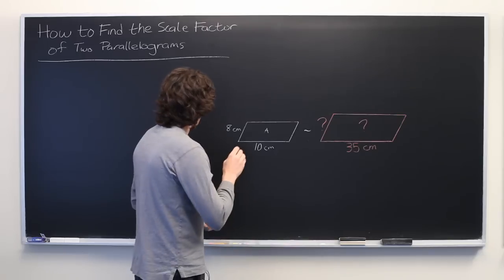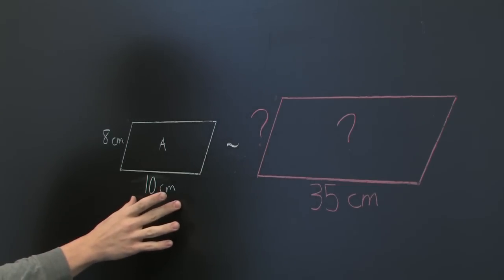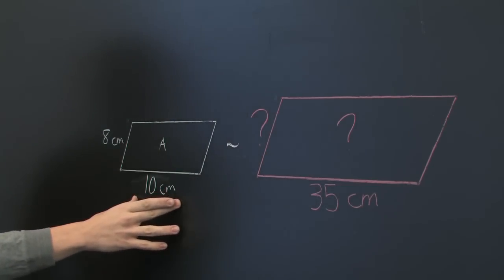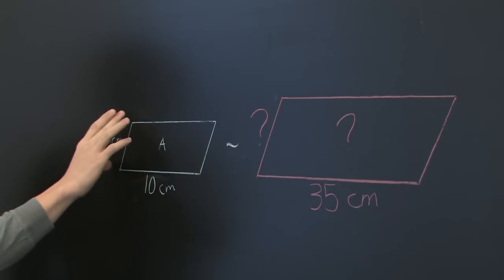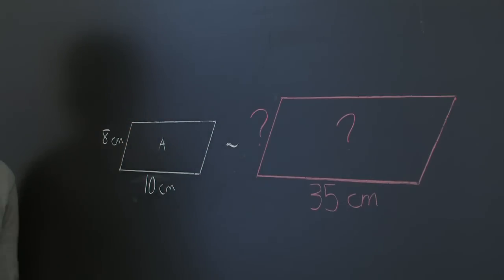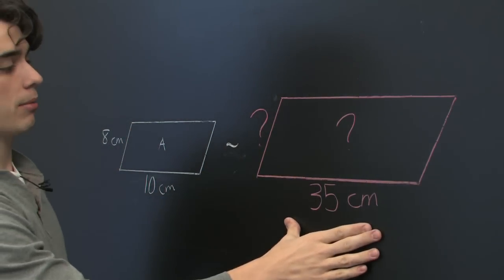Okay, we are also given that the length of the bottom side of this parallelogram is 10 centimeters, and the length of this side is 8 centimeters. We know the length of this bottom side here,